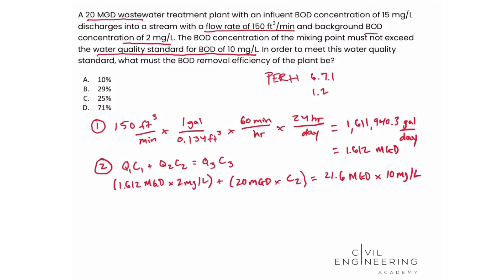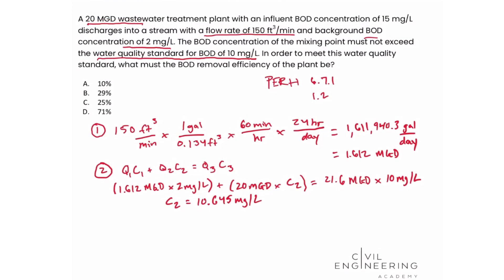Solving this equation for C2, we get the answer that C2 is equal to 10.645 mg per liter. We're not finished yet because what we calculated in step 2 is the effluent BOD concentration from the treatment plant, but the problem asks for the BOD removal efficiency of the plant.